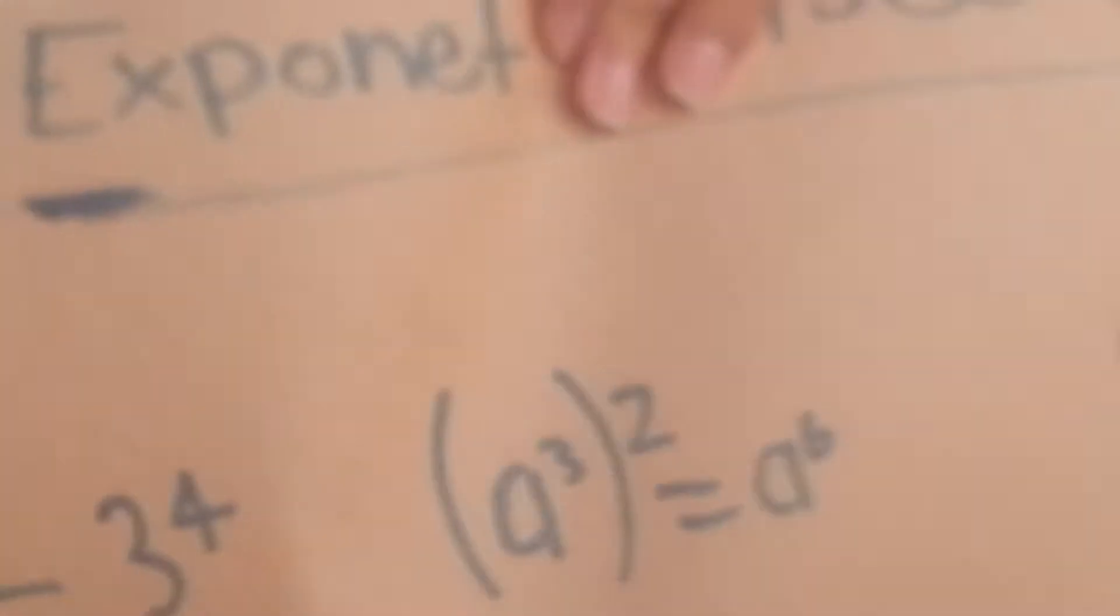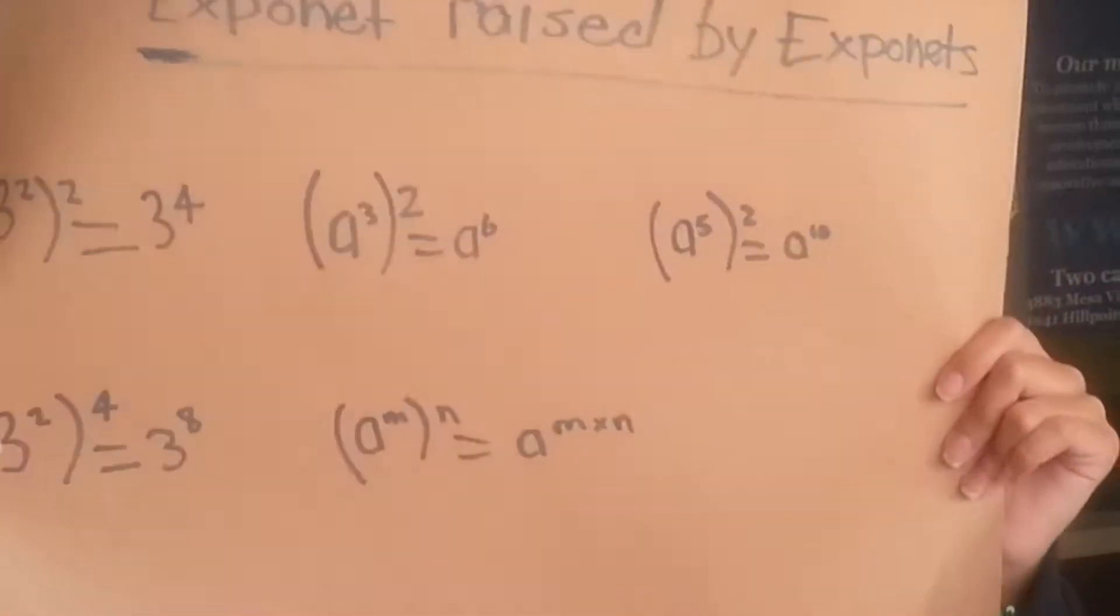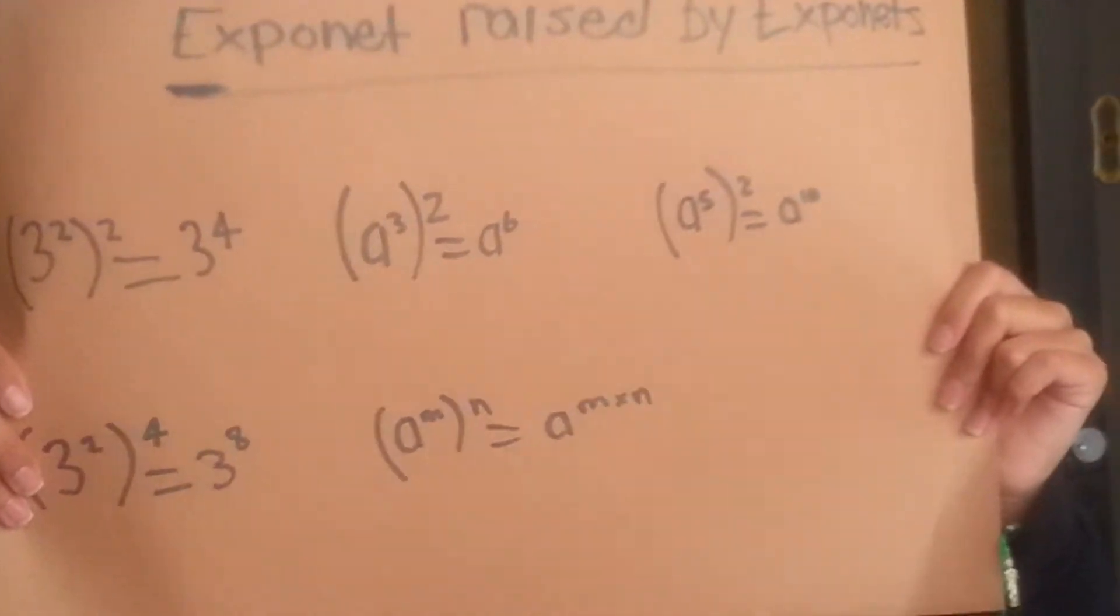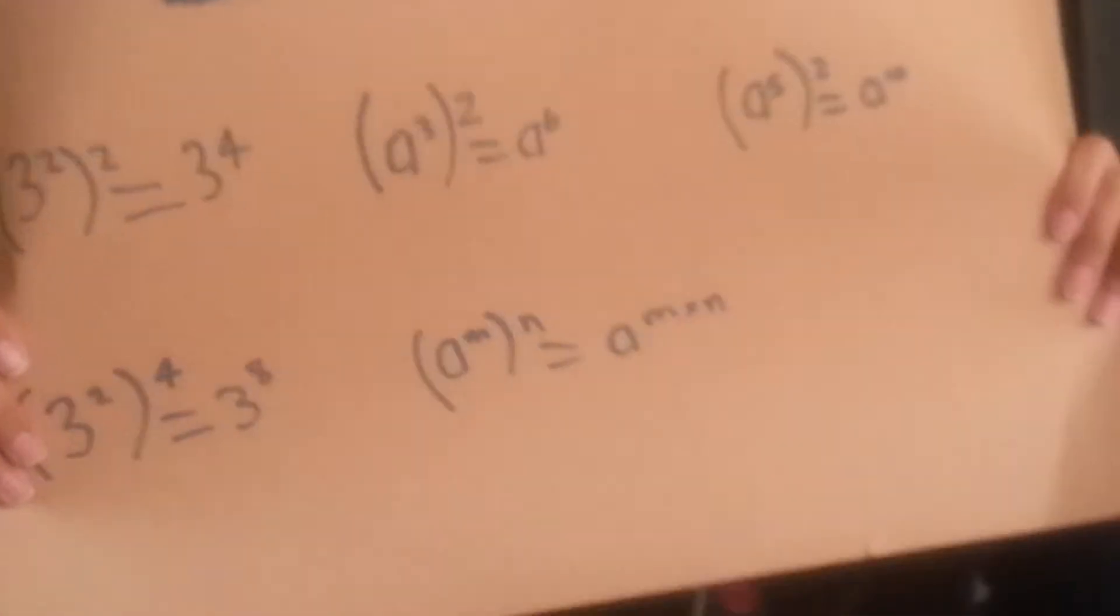Raised by exponents, times the exponent. You multiply your exponents by the exponent. First law of exponents, raising zero by the base.